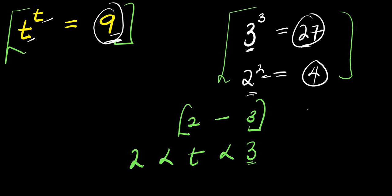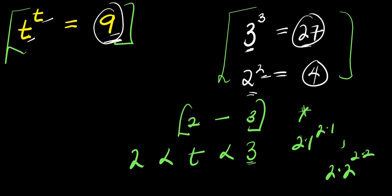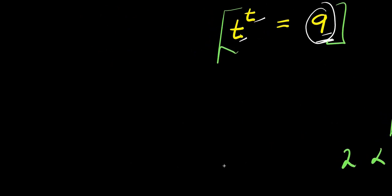We cannot just be testing values — that is going to take a lot of time, because you would need to consider 2.1 raised to the power of 2.1, then 2.2 raised to the power of 2.2, and so on. That will take a whole lot of time. So let's solve this properly: we are going to make use of the natural log.